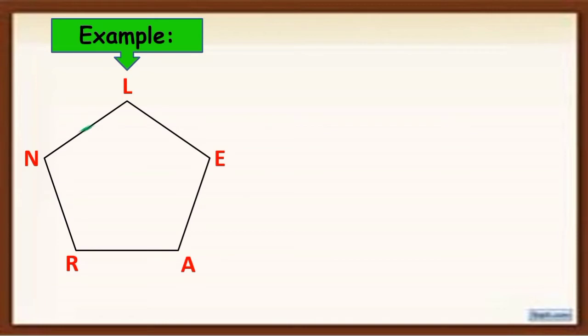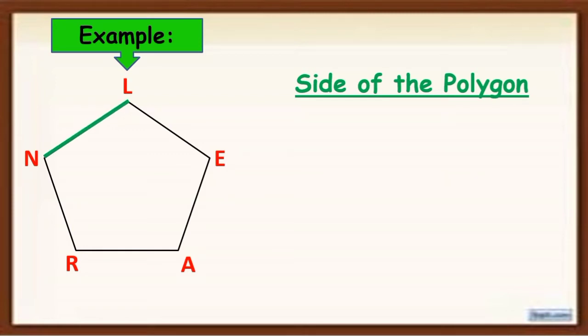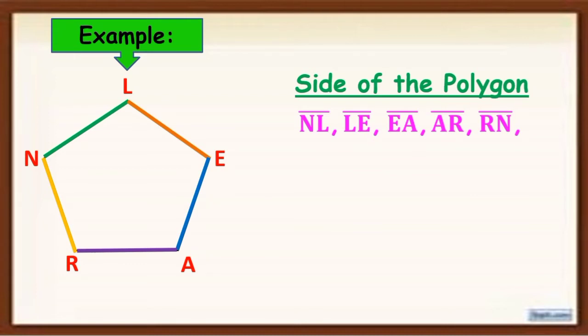Now let's have this example. These line segments are called the side of the polygon. If I'm going to name each side of the polygon, this side is line segment NL. This one is line segment LE. This one is line segment EA. This one is line segment AR. And this one is line segment RN. Remember, pwedeng magpalitan or pwedeng mag-interchange yung kanilang name.